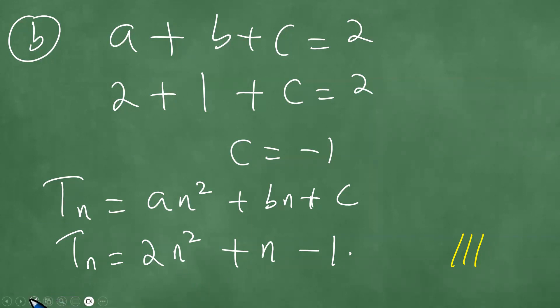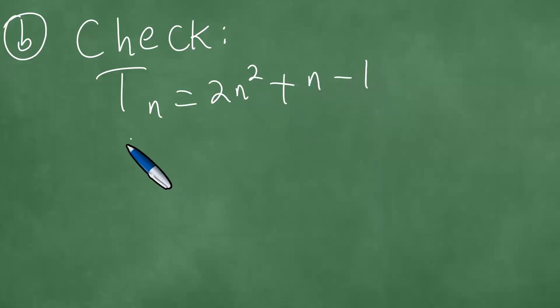Now we can do a check. The examiner did not ask us to check, but we can do a check in part b. We got that Tn equals 2n squared plus n minus 1, so that T1 is 2 times 1 squared plus 1 minus 1, which equals 2.